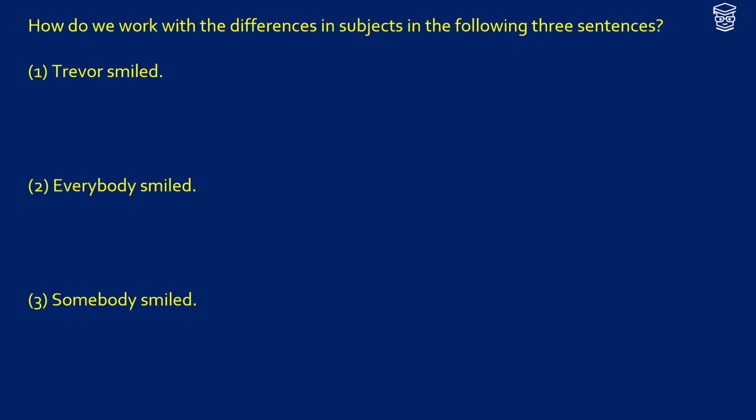We want to figure out the difference between the sentences 'Trevor smiled,' 'everybody smiled,' and 'somebody smiled.' In predicate logic, if we say 'Trevor smiled,' what we would get is something like this: smiled(T) — T smiled.